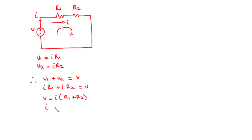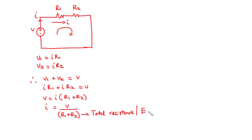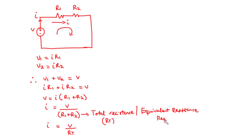So, if you want to find the total current flowing through the circuit, that is given by I equals V divided by R1 plus R2. R1 plus R2 is what we call the total resistance or the equivalent resistance — RT or REQ — and the two describe the same thing, representing the combination of the two resistors in the circuit.